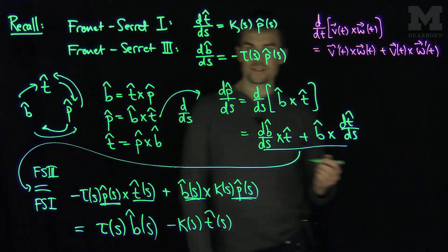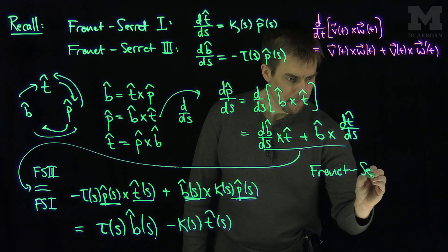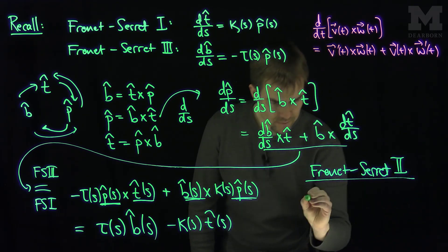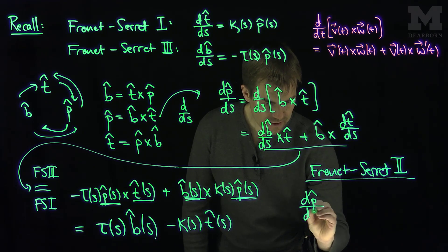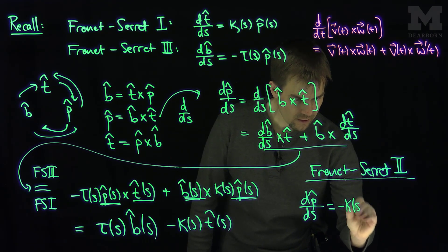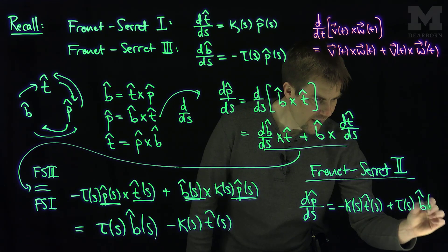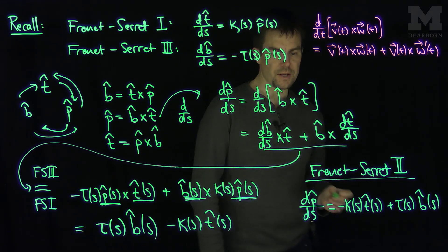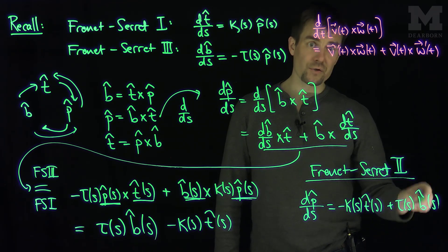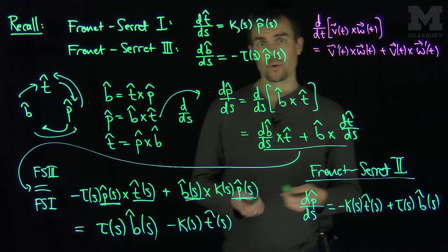And that gives us our second Frenet-Serret equation. So Frenet-Serret number 2 tells us that dp ds is negative curvature of s, t hat of s, plus torsion of s, b hat of s. So the derivative of the principal normal vector with respect to arc length parameter is a combination of the unit tangent vector and the unit binormal vector, and the coefficients are the negative curvature and the torsion, respectively.